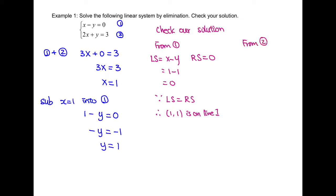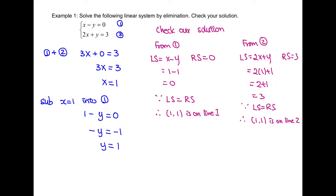Next, we have to check with equation 2. Write down the left-hand side, which is 2x plus y. Substitute the values we just found and we get 3. On the right-hand side, it's already 3. So since left-hand side equals right-hand side, the point is also on line 2. Because the point is on line 1 and also on line 2, therefore our solution — the point of intersection between the two lines — is at (1, 1).